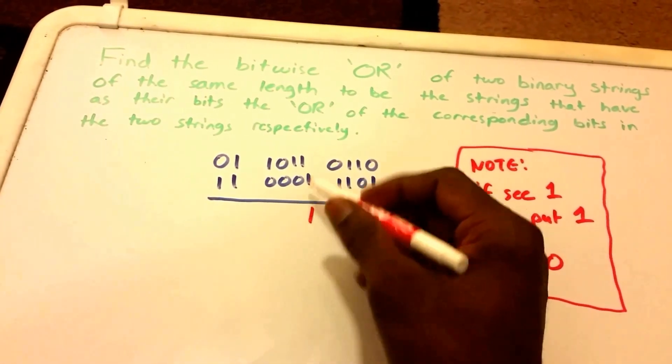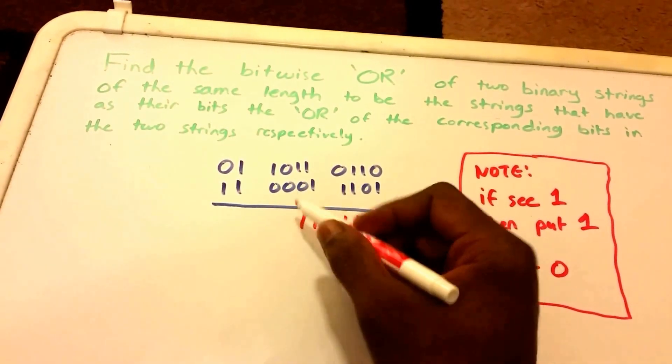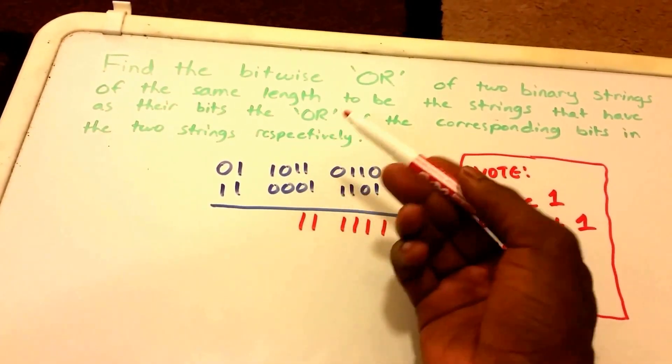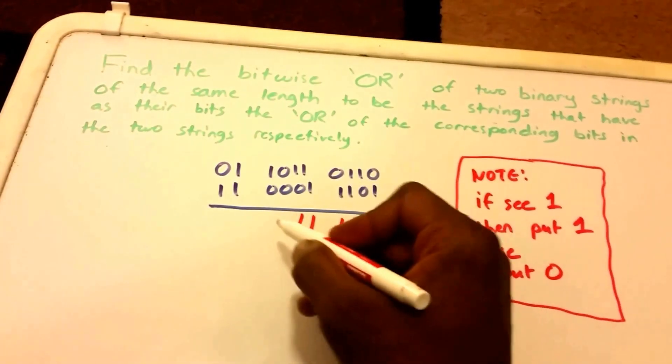Two zeros, we don't see a 1. So if we see a 1, then we put 1, else we put 0. So we don't see a 1, we put 0.